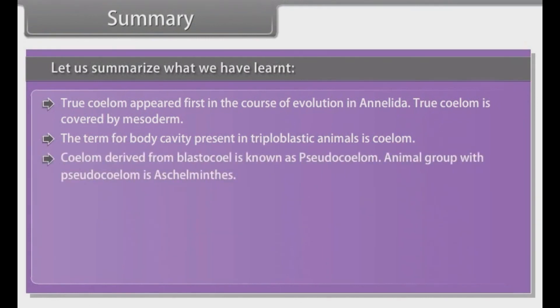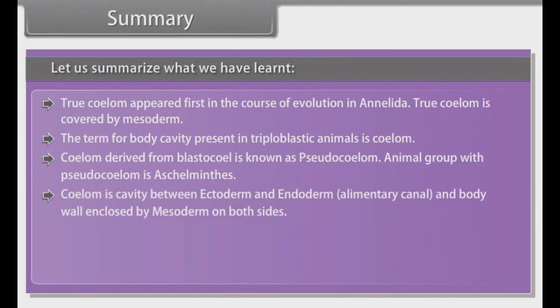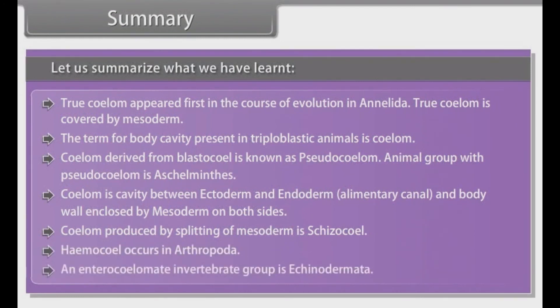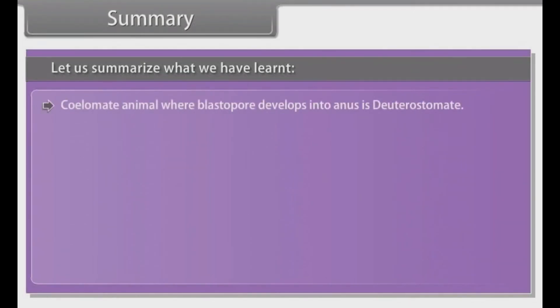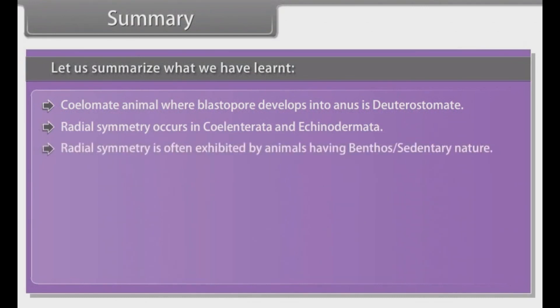True coelom is covered by mesoderm. The term for body cavity present in triploblastic animals is coelom. Coelom, derived from blastocoel, is known as pseudo-coelom. Animal group with pseudo-coelom is aschelminthes. Coelom is cavity between ectoderm and endoderm, that is elementary canal, and body wall enclosed by mesoderm on both sides. Coelom, produced by splitting of mesoderm, is schizocoelom. Haemocoel occurs in Arthopoda. An enterocoelmate in vertebrate group is echinodermata. Coelomate animal where blastopore develops into anus is deuterostome. Radial symmetry occurs in coelenterata and echinodermata. Radial symmetry is often exhibited by animals having benthos or sedentary nature. Metamerism is characteristic of Annelida.